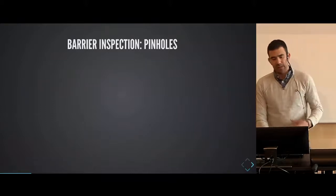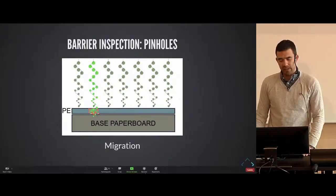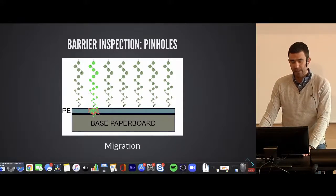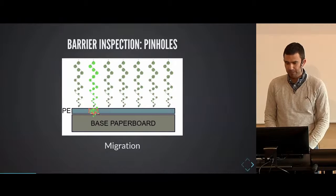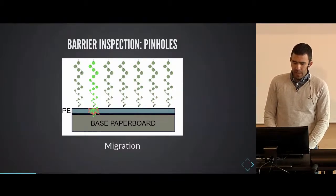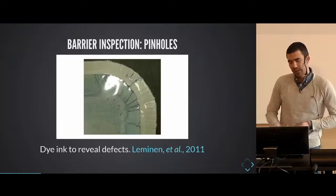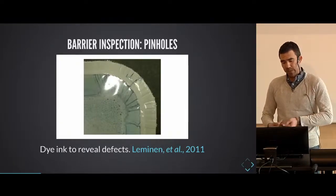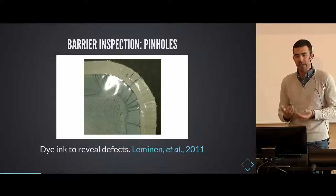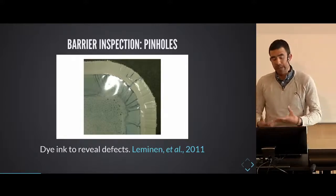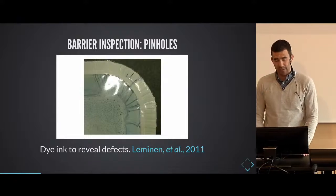To measure the barrier functionality, one of the most common defects found in this material is what are called pinholes — micrometer-scale holes that affect the barrier functionality by allowing contaminants to migrate inside the product. These holes cannot be detected by the human eye. They are inspected in the lab by taking samples from production and bringing them to the quality control lab, where a solution is placed on top of the plastic and, after some time, makes all these defects visible. The inspector can then quantify and assess whether the product passes quality control.